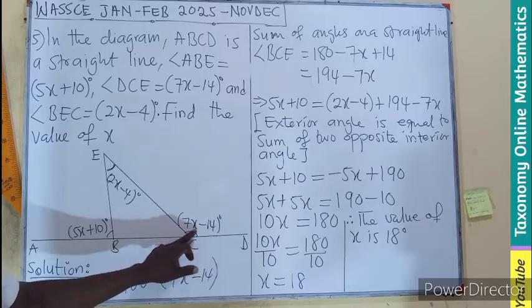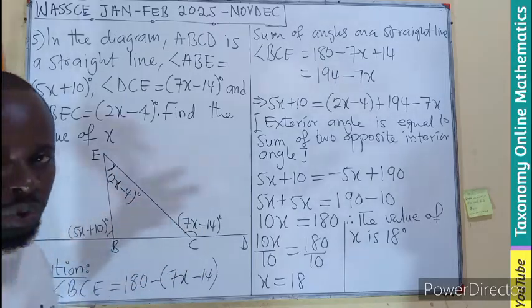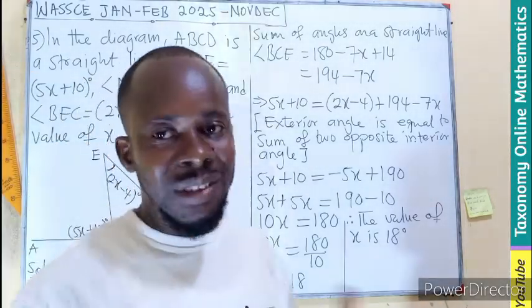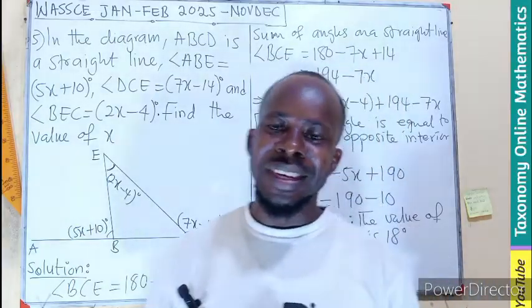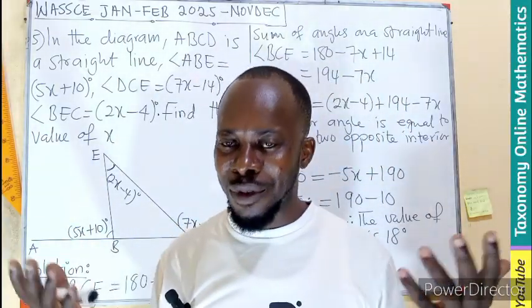Or the value of this angle will be equal to this plus this. Those are the properties of the exterior angle theorem property of a triangle. I guess you follow through.